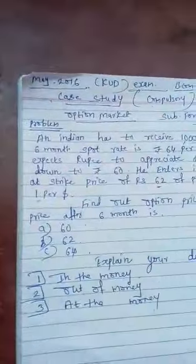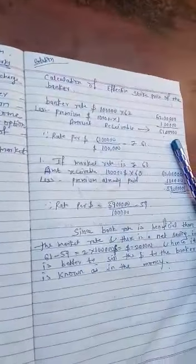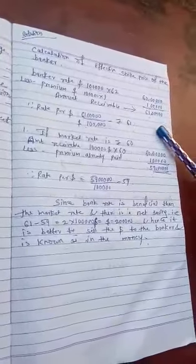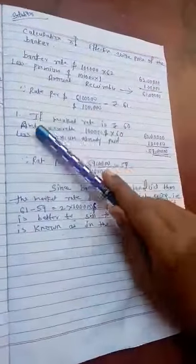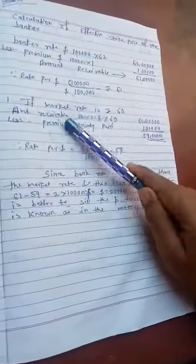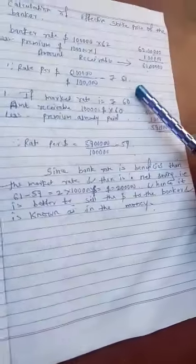So 62 lakh minus 1 lakh equals 61 lakh, which is the amount receivable. Therefore, rate per dollar is 61 lakh divided by 1 lakh, which equals 61.